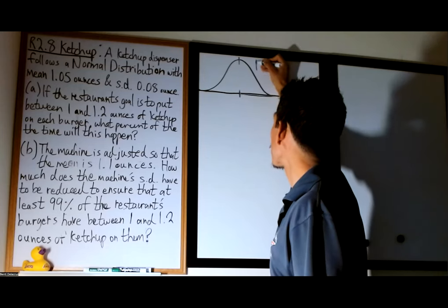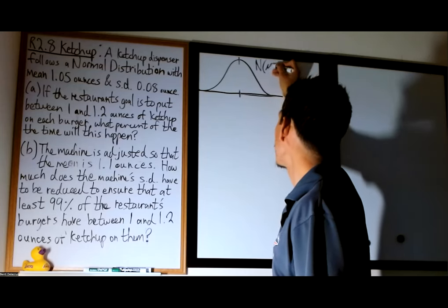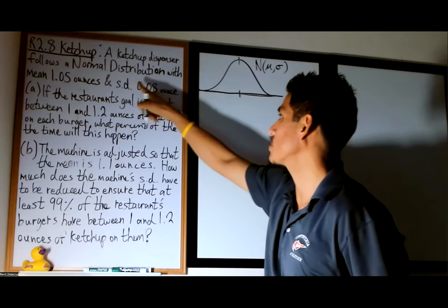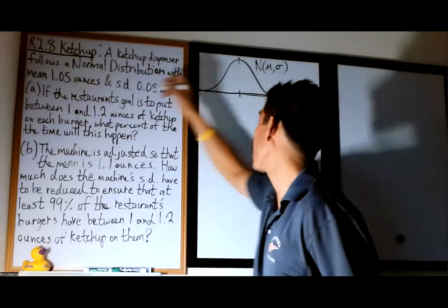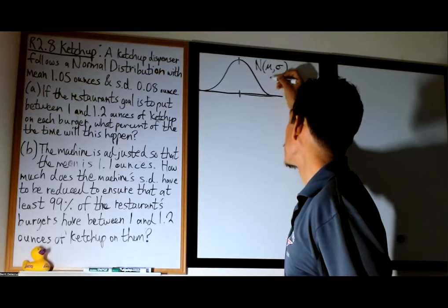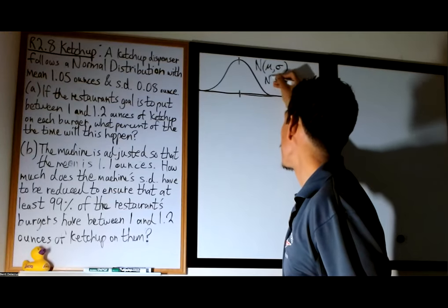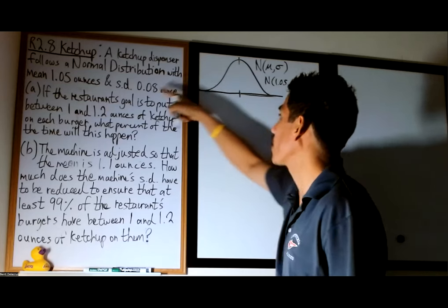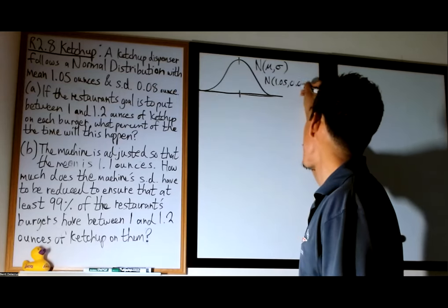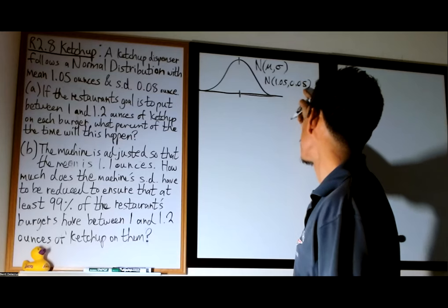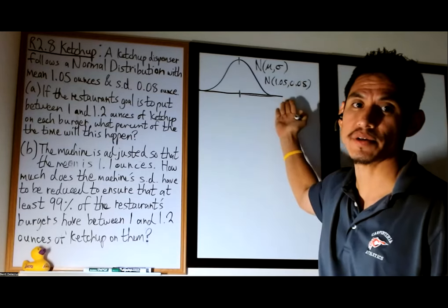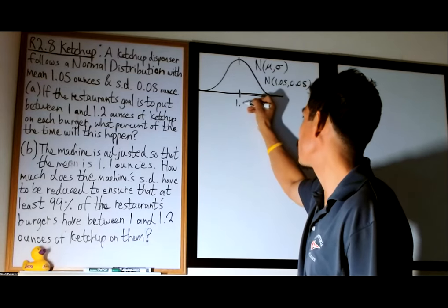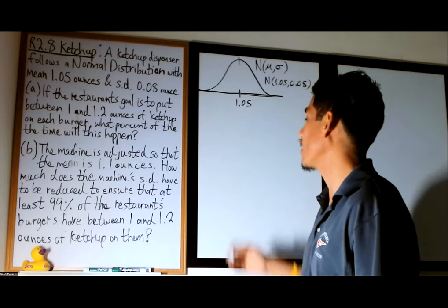If it's normal, we write N. Remember, our normal curve has this notation: N of mu comma sigma. So this is a normal distribution with a mean of 1.05, meaning mu is 1.05. You can write this as N of 1.05 comma 0.08. Know this notation because it's going to be understood from here on out. So that means this point in the middle will be 1.05.